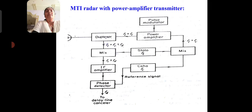This is the block diagram of MTI radar with the power transmitter. The components include a duplexer, mixer, IF amplifier, phase detector, pulse modulator, power amplifier, STALO, COHO, and mixer. One configuration is based on the oscillator, using a magnetron oscillator for the pulse modulator.